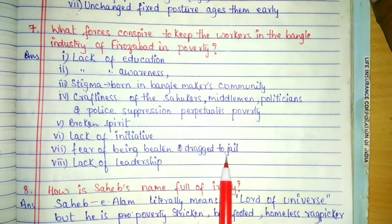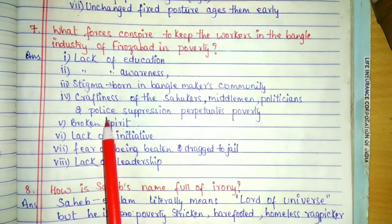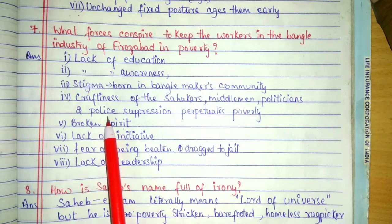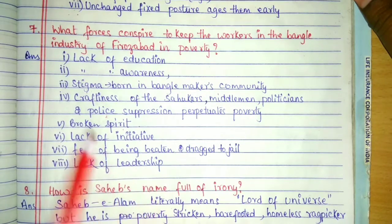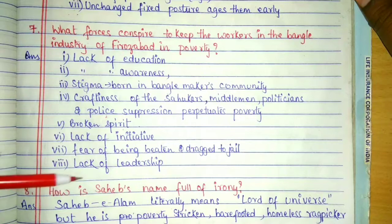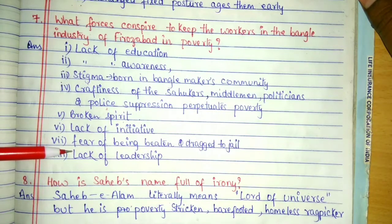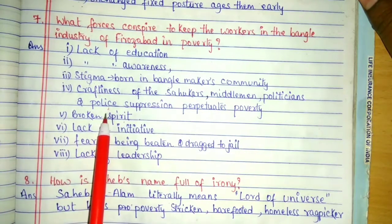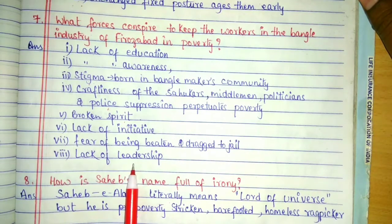Fear of being beaten and dragged to jail. There is a connection between the sahukar, middleman, politician, and police. Police don't support the glass bangle makers; they always think about their commission from sahukars, middlemen, and politicians. Therefore they are also culprits. Lack of leadership — who will initiate the movement or the fight? There should be somebody to lead them, but because of lack of education they don't have proper knowledge. And if they miss work for one day, their family will go hungry.